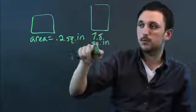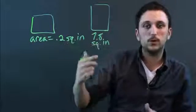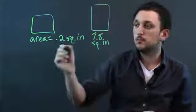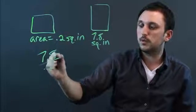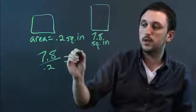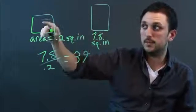So, the scale factor between them, if it was 8 and 2 or 7.8 and 0.2, the way you find it is the exact same. You take the big one and divide it by the small one. So, 7.8 divided by 0.2 equals 39. That means this one is 39 times bigger than this one.